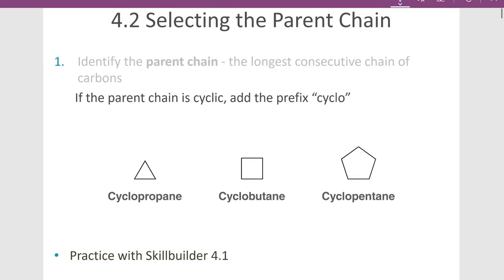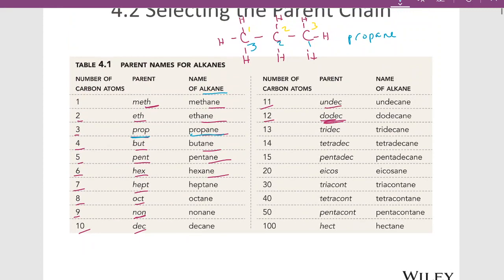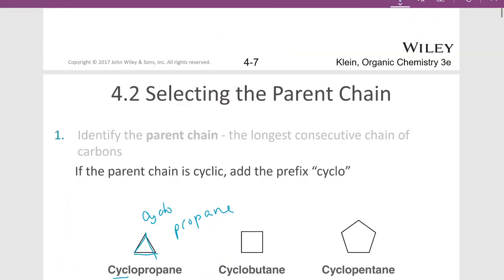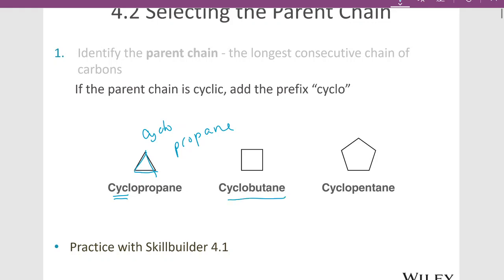Sometimes the parent chain is a ring. If we have three carbons in a ring, our prefix is prop, and since there are no double or triple bonds it's a derivative of propane — but since it's a ring, we give it the prefix cyclo. So this molecule is cyclopropane. The next molecule has four carbons in a ring, so it's cyclobutane. The next has five carbons in a ring: 1, 2, 3, 4, 5 — the prefix for five is pent, so this is cyclopentane. No double bonds, no triple bonds.